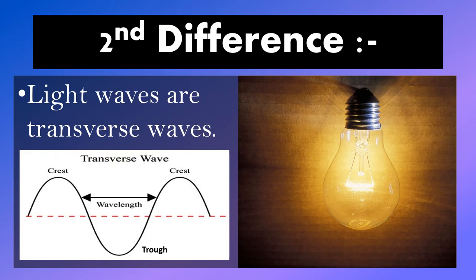Another difference between light waves and sound waves is that light waves are transverse waves. A transverse wave is a wave whose oscillations are perpendicular to the direction of the wave's advance. Transverse waves consist of crests and troughs.